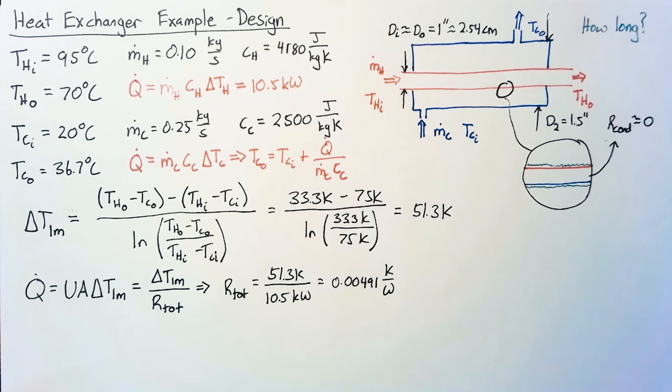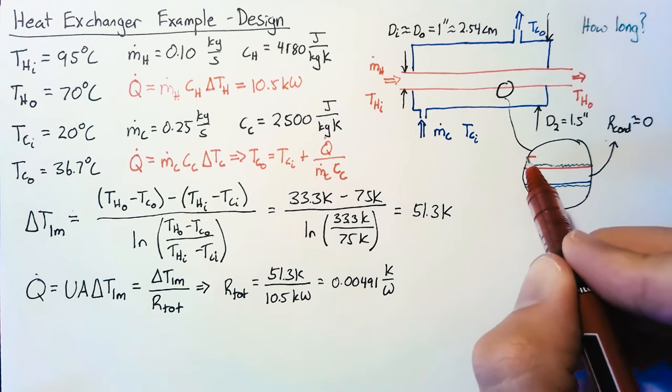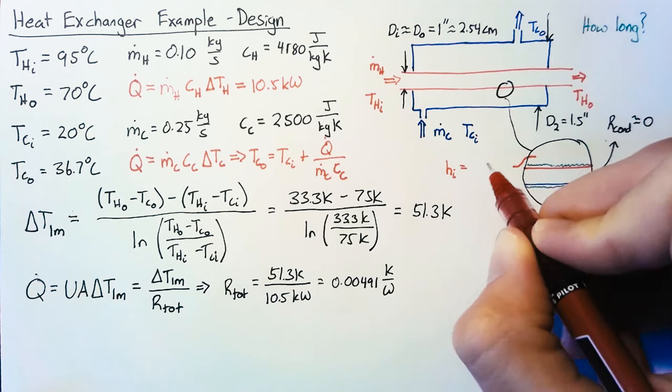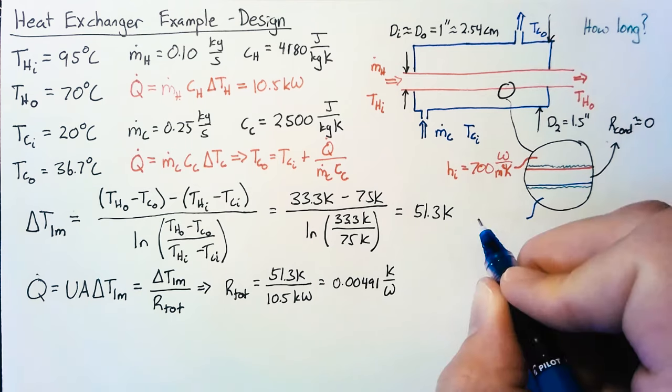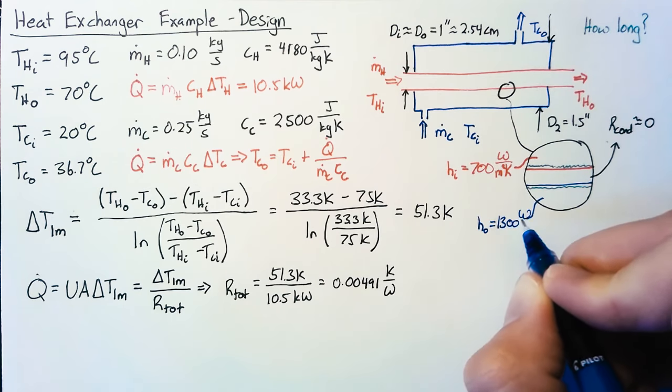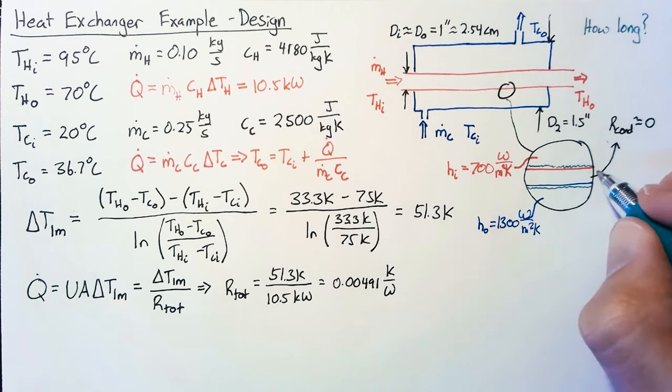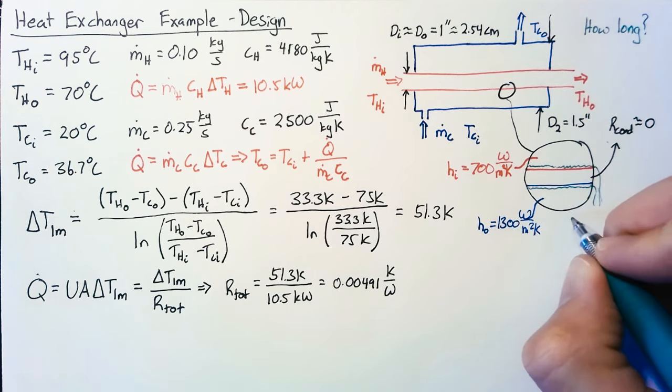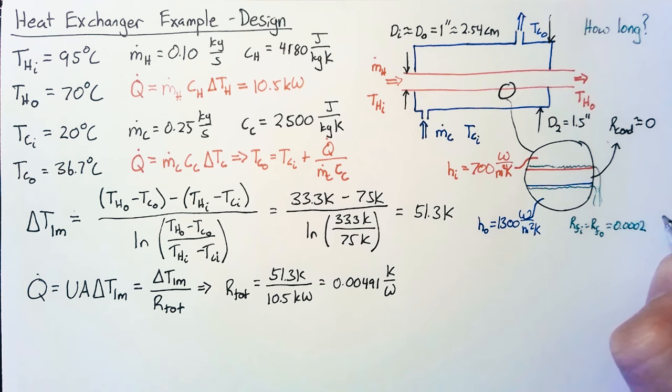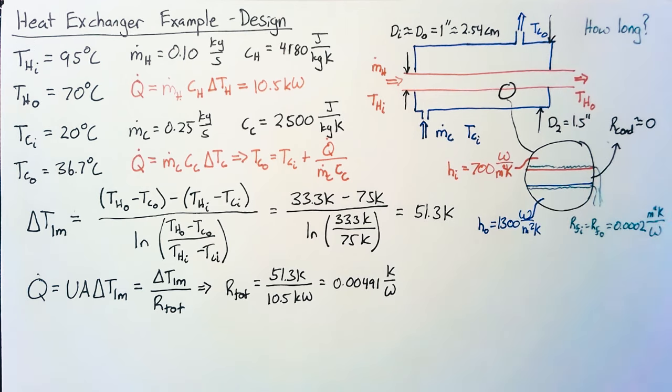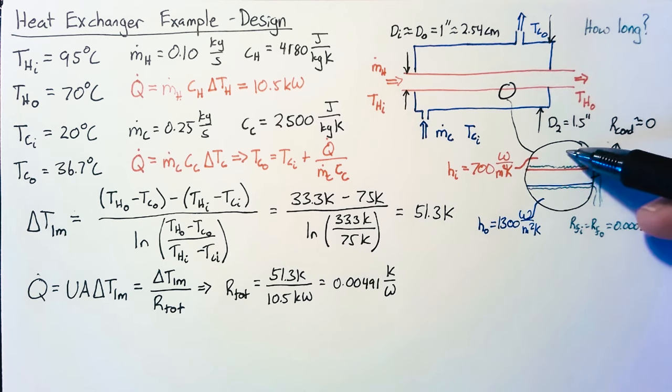What we do need to think about is the convection heat transfer from the hot side, and we can set our h_h to 700 watts per meter squared Kelvin. We need to think about our heat transfer rate on our cold side, which is 1300 watts per meter squared Kelvin. And then finally, we need information about this fouling. We're going to say that our interior and exterior fouling factors are both 0.0002, with units of meters squared Kelvin per watt. That gets us all the way from the hot side to the cold side, neglecting heat transfer through the pipe.